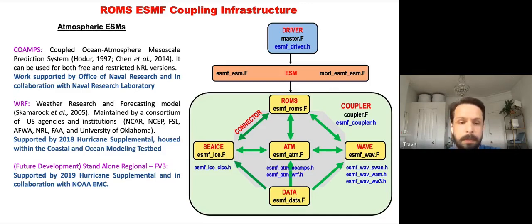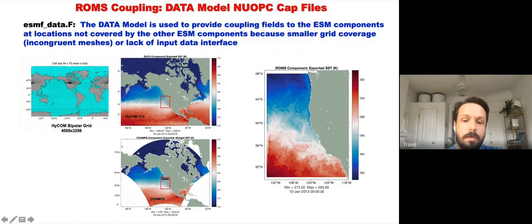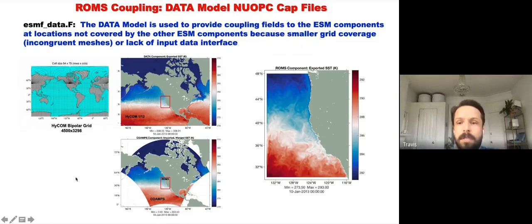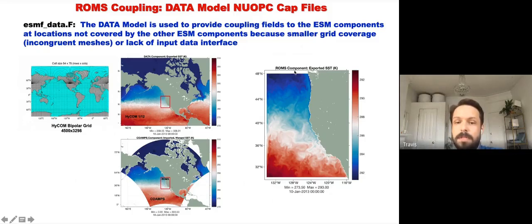For the data model: a data layer is needed where the WRF grid and ROMS grid don't match up. For a COAMPS-ROMS application, there's a HyCOM data layer underneath COAMPS wherever ROMS doesn't exist, so you can focus coupling in just one small coastal area to save computational time and storage. The exported SST shows a fairly seamless transition between the HyCOM and ROMS layers.